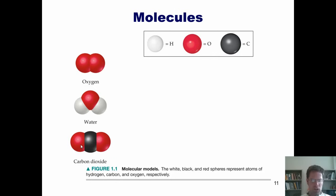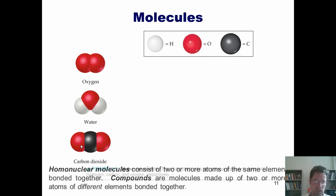Now I should specify here that there are actually two different kinds of molecules. Homonuclear molecules consist of two or more atoms of the same element bonded together. Compounds, in contrast, are molecules that are made up of two or more atoms of different elements bonded together. So in this example, oxygen is a homonuclear molecule because it's made up of two different oxygen atoms.